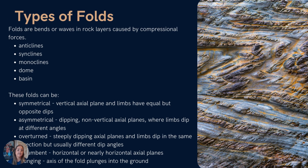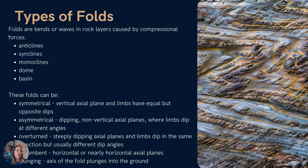Looking at types of folds: the two basic types are anticlines and synclines. We can also talk about monoclines, domes, and basins. These folds, depending on what has happened to them, might be symmetrical, asymmetrical, overturned — where the limbs are pointing in the same direction instead of down into the earth — recumbent, where the fold is horizontal or nearly horizontal to its axial plane, or plunging, where the fold is also plunging into the earth.